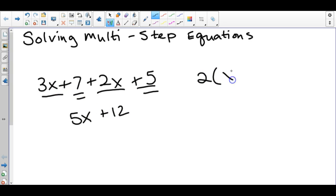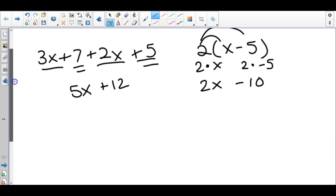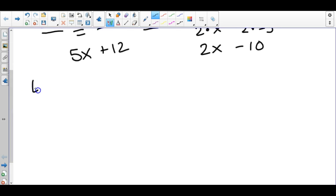You'll also need to be able to distribute. When you have parentheses and this outside number is used twice, you do 2 times x to get 2x, and 2 times negative 5 to get negative 10.